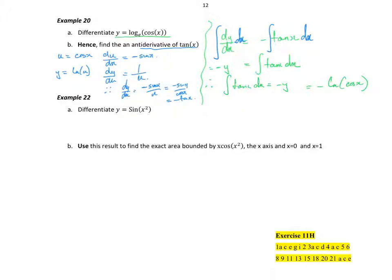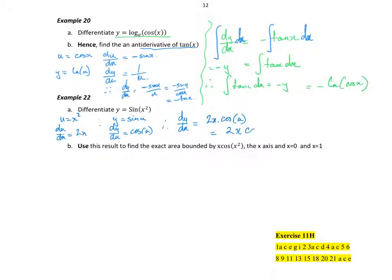So the same sort of flow: work out a derivative, and the answer to that derivative should contain the integral or anti-derivative that we're trying to work out. Last one: differentiate y equals sin(x²). If I put u equal to x², then du/dx equals 2x. Therefore y equals sin(u), so dy/du equals cos. Therefore dy/dx equals 2x times cos u, which is 2x cos(x²). There's my derivative.